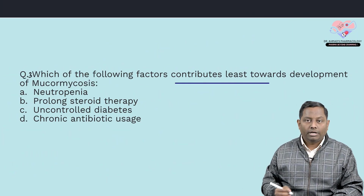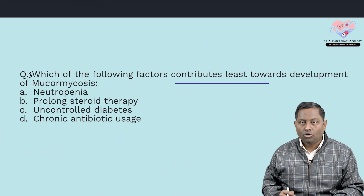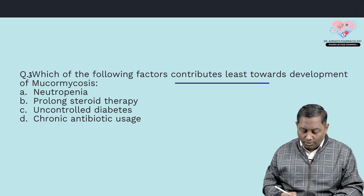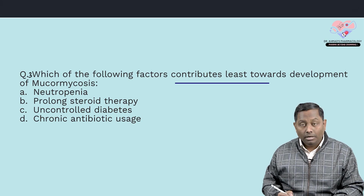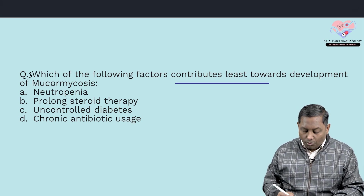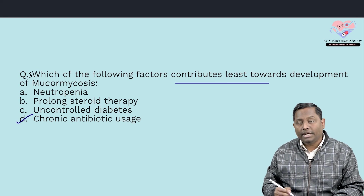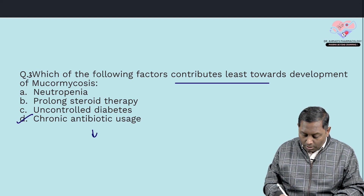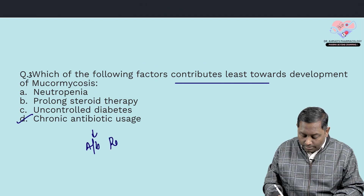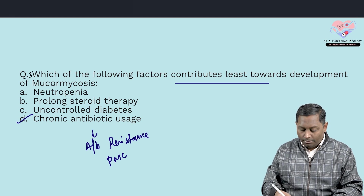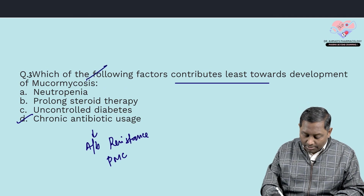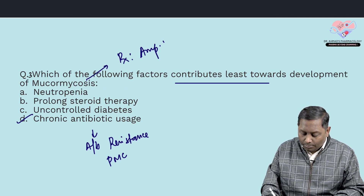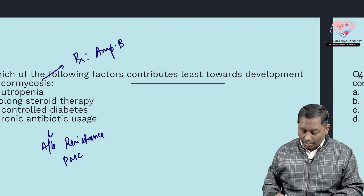The next question is about mucormycosis, a fungal infection mainly seen in immunocompromised patients. Among the given choices, neutropenia, prolonged steroid use, and uncontrolled diabetes all contribute to immunocompromisation. However, chronic antibiotic usage is not associated with mucormycosis — it may cause antibiotic resistance or pseudomembranous colitis, but not mucormycosis. The drug of choice for management is liposomal amphotericin B.